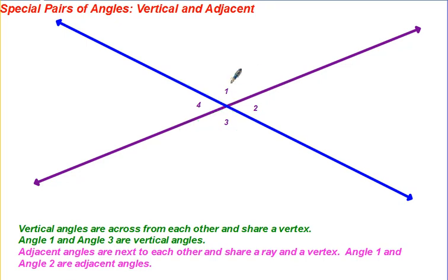Adjacent angles are next to each other. Angle 1 and angle 2 are adjacent angles. They share this ray between them and they share this vertex.